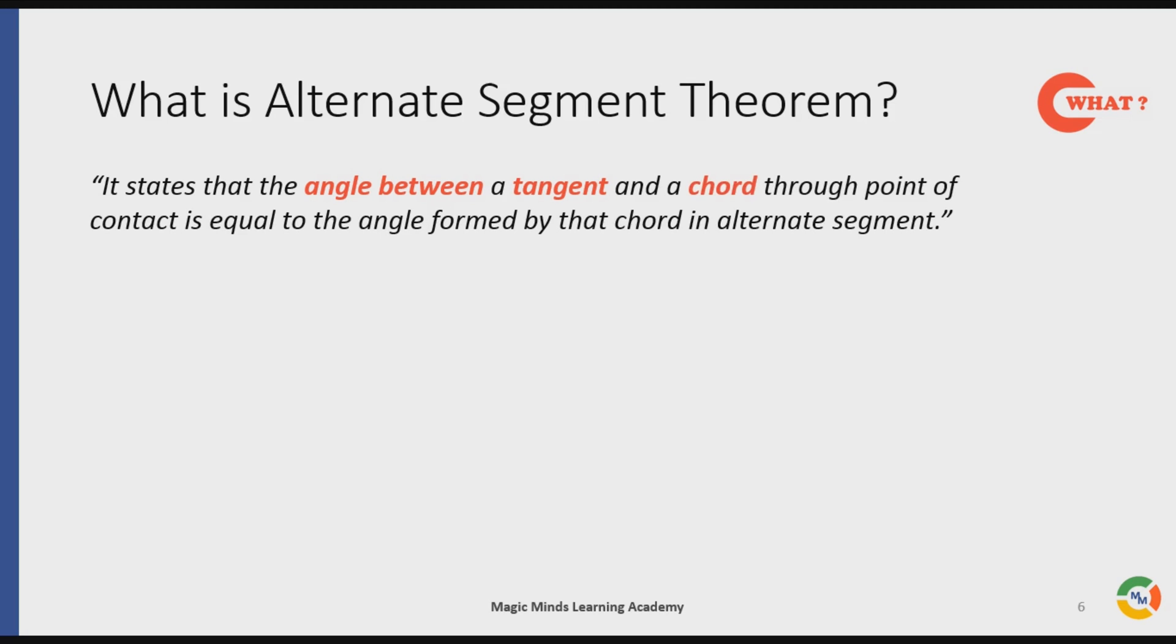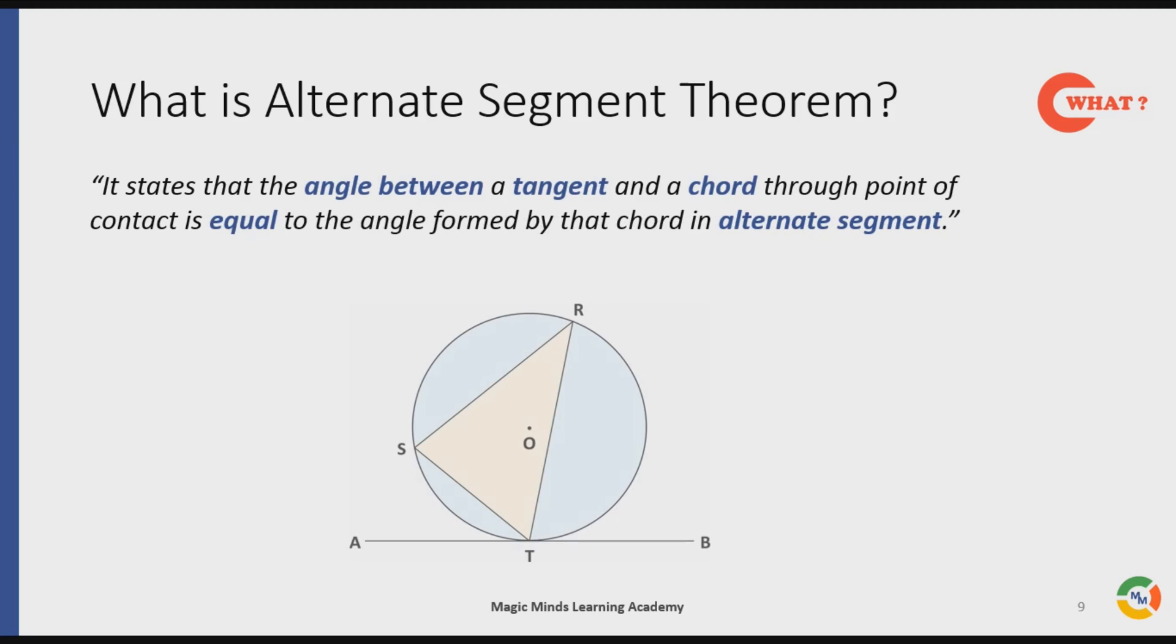Now let's see the graphical representation of the theorem. Here is a circle as shown in light blue color with center O. AB is a tangent to this circle at point of contact T, while ST and RT are the chords of the circle.